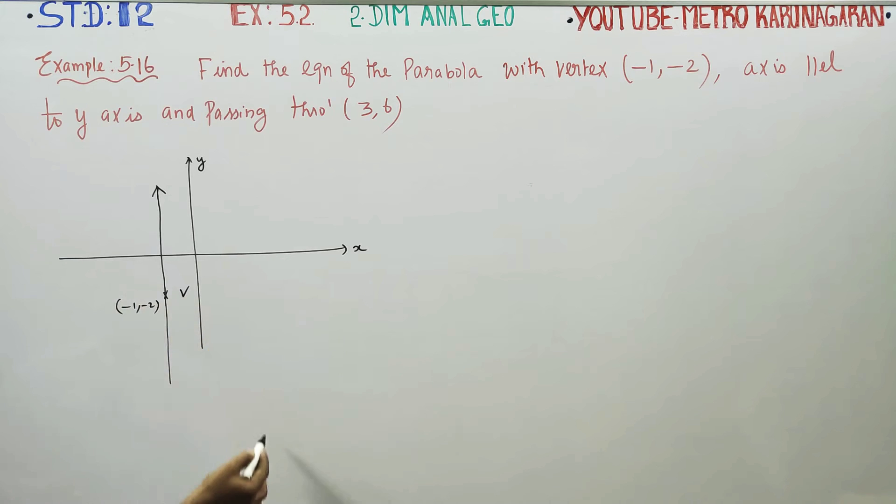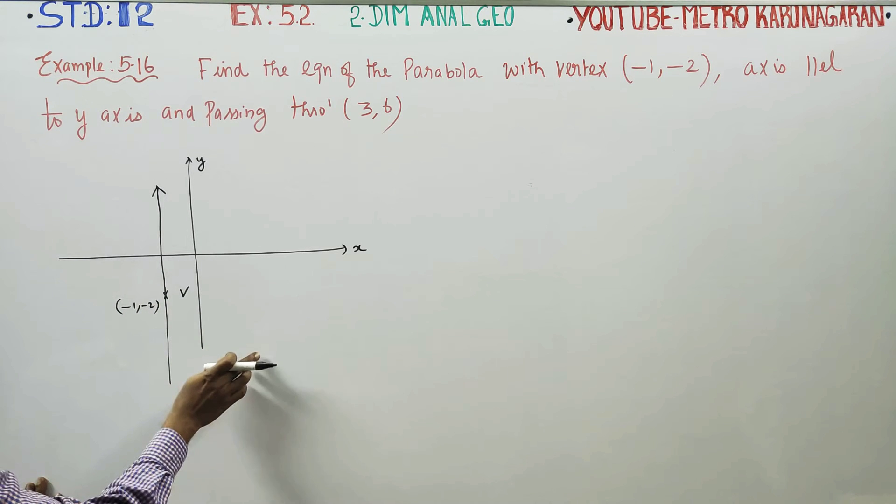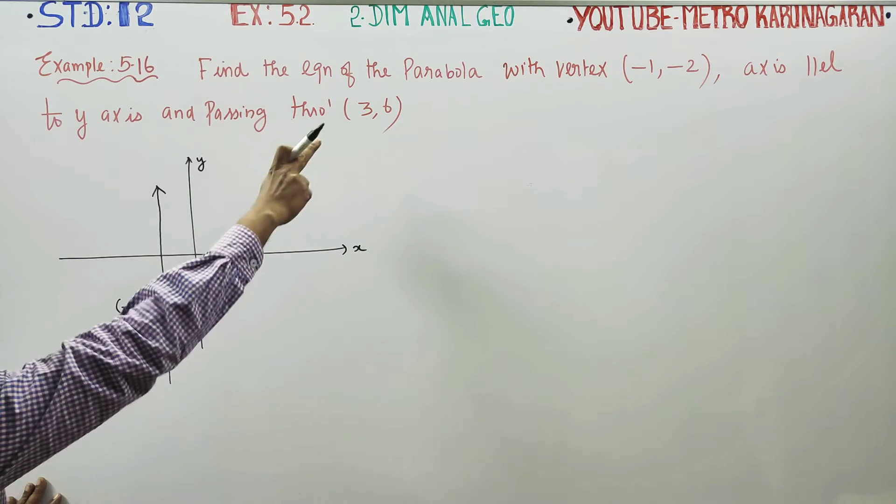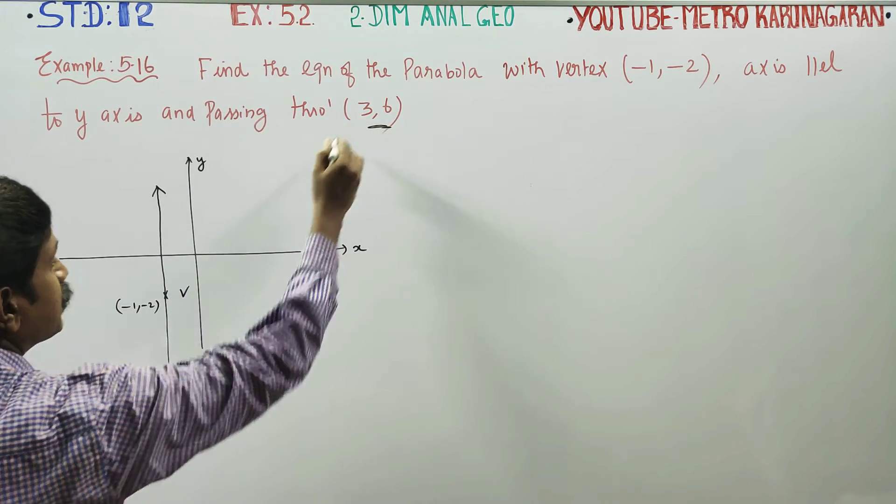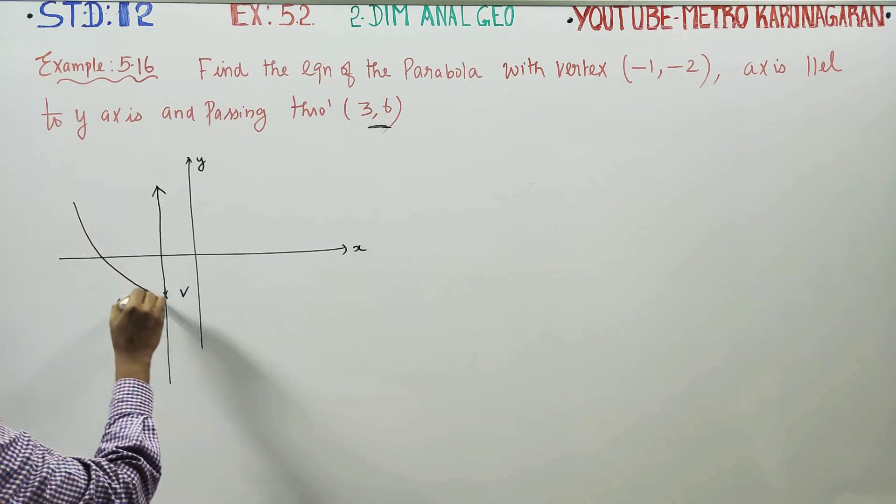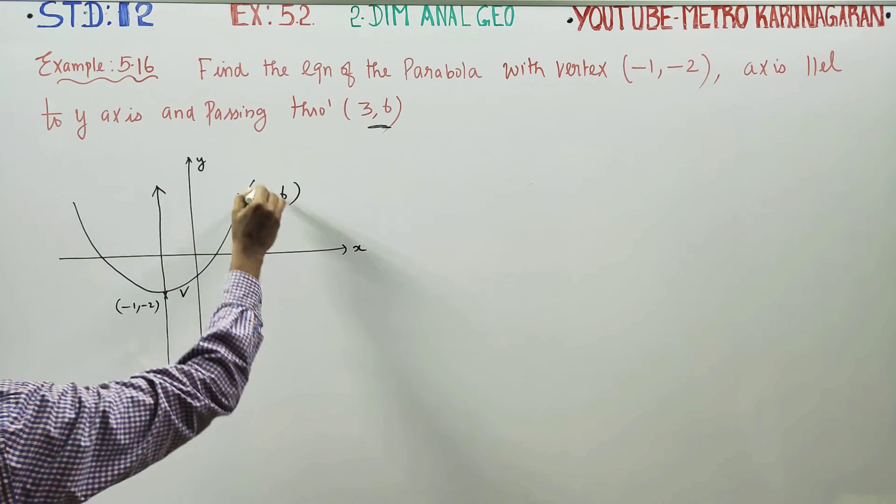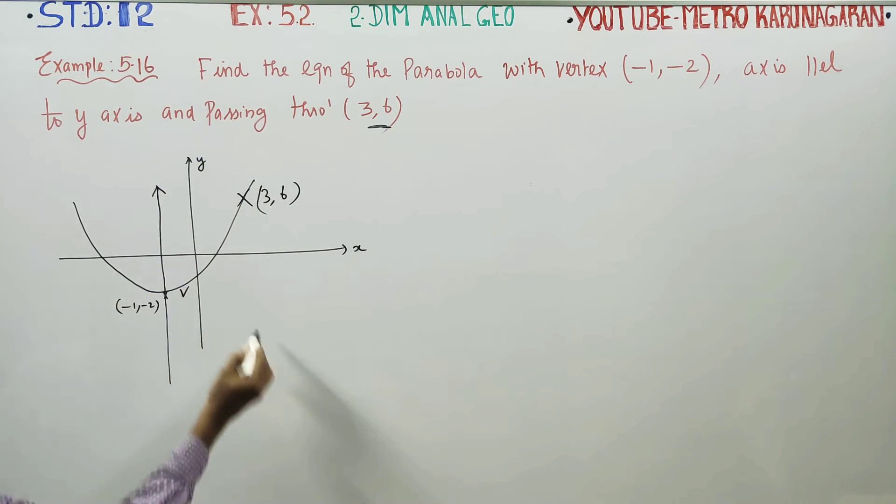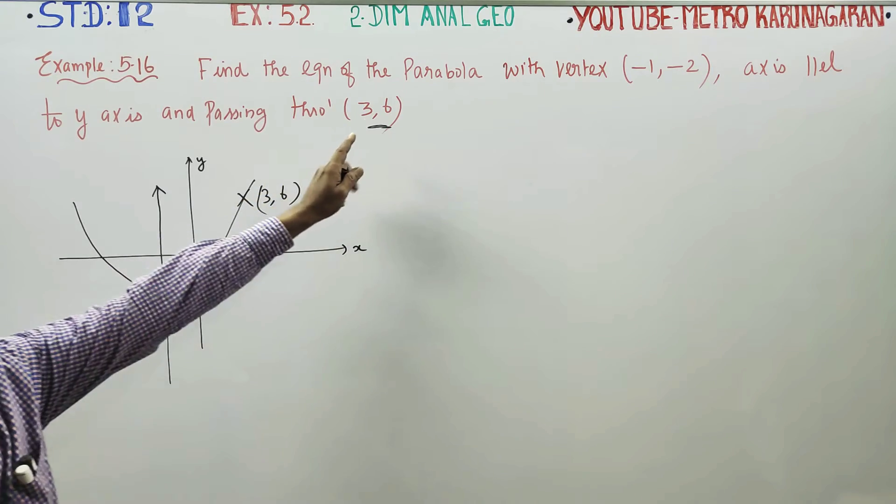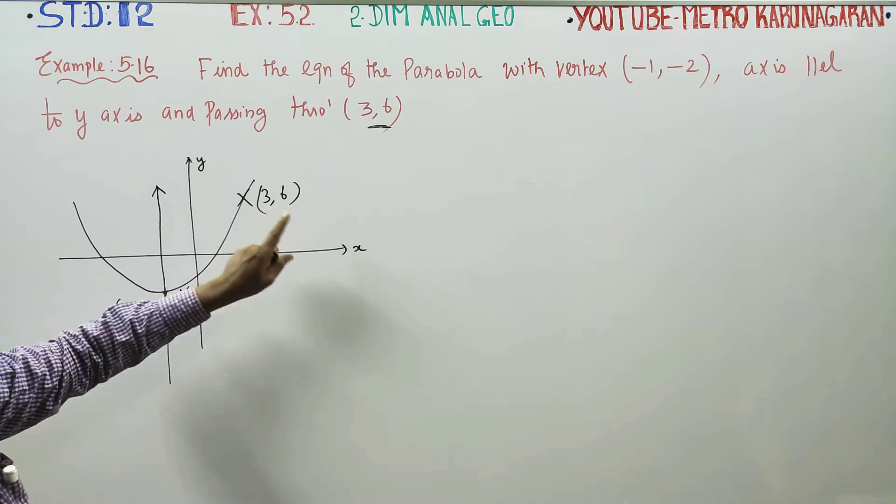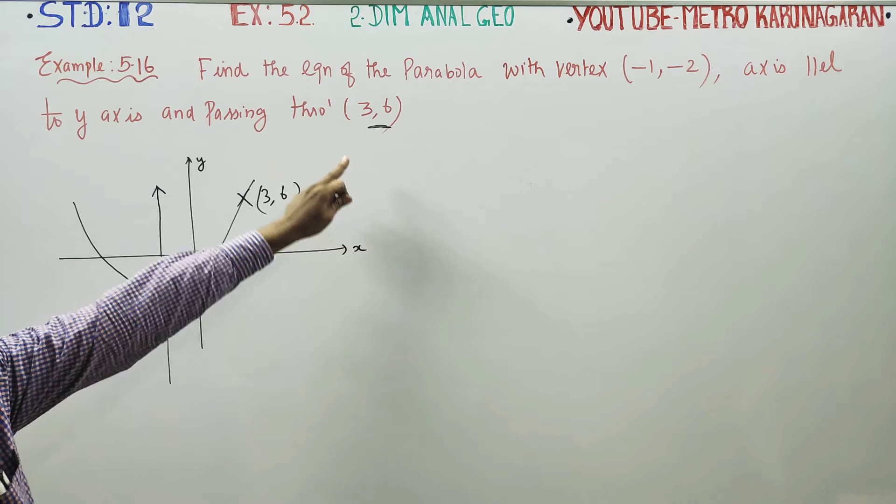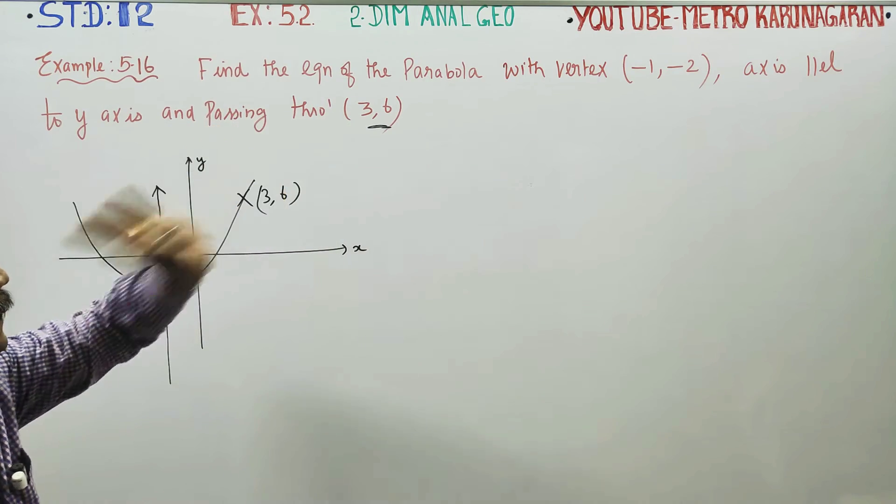This is positive value. The point 3 comma 6 is positive, so you can reach it. That is why the parabola opens upward. Fine.